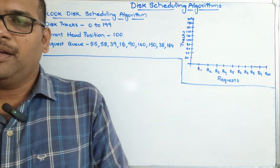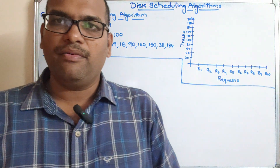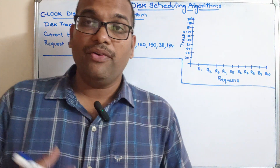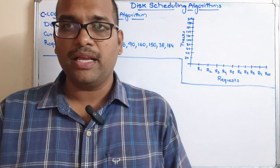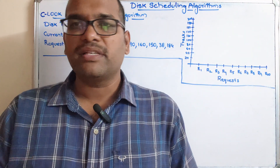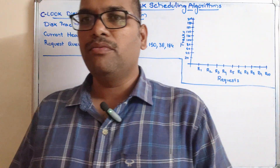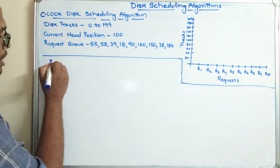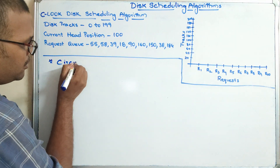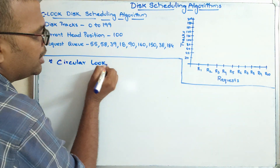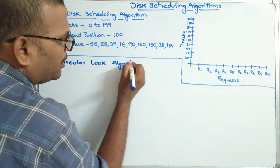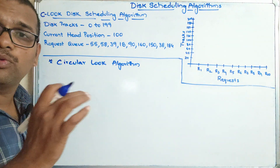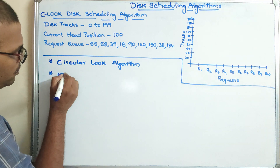Hello friends, welcome back to our channel. In today's session we'll see one more disk scheduling algorithm: the C-LOOK disk scheduling algorithm. In our previous sessions we have seen many disk scheduling algorithms like FCFS, SSTF, SCAN, C-SCAN, and LOOK scheduling. Now we'll see the C-LOOK disk scheduling. C-LOOK stands for Circular LOOK scheduling algorithm.